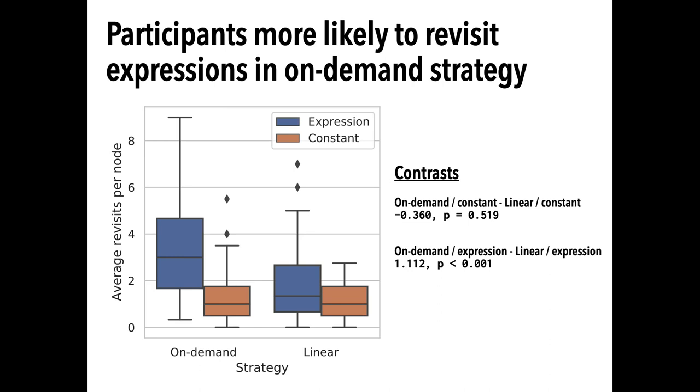This is somewhat consistent with our hypothesis, in that on-demand tracers would revisit their earliest lines first. And another implication is that people adopting the on-demand strategy overall forgot program state more often, which could mean that the on-demand strategy has a greater load on working memory.